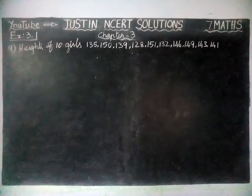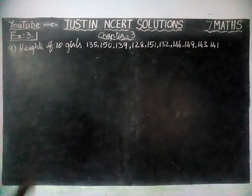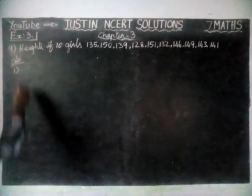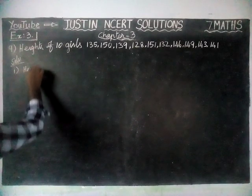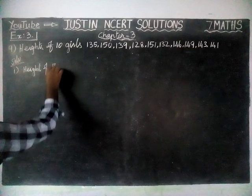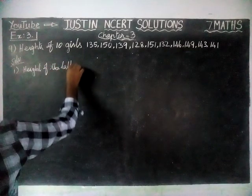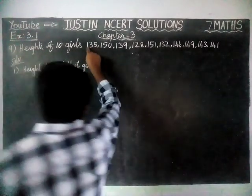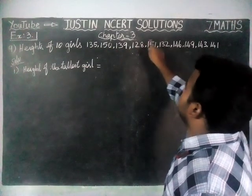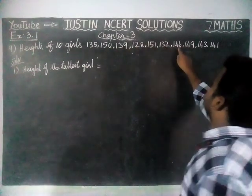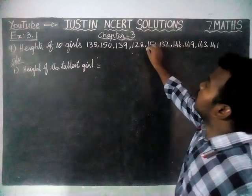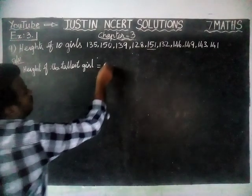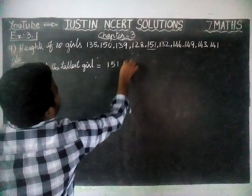First, we are going to find the height of the tallest girl. Here you can consider 135, 150, 139, 128, 151, 132, 146, 149, 143, 141 — and here the highest height, that is the tallest girl, is 151. So the tallest girl's height is 151 centimeter.